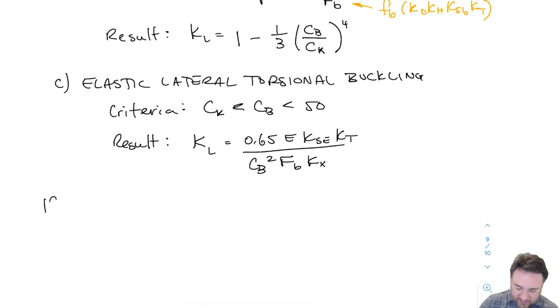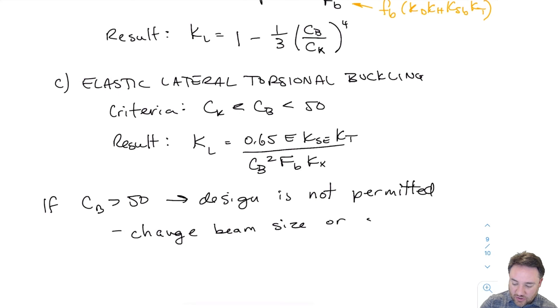So what happens if CB is greater than 50? Then the design is not permitted. CB equals 50 is a limit on acceptable slenderness. If we don't fall into CB less than 50, we have to change the design by either changing beam size or changing restraint conditions, both of which would change CB. This is just like the case we had for column buckling design where CC also happened to be 50.